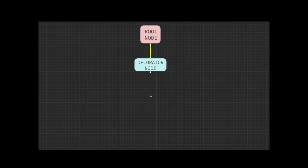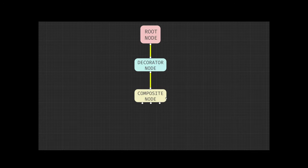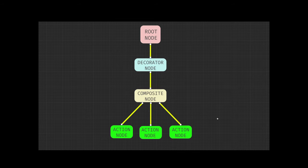The decorator node is basically capable of augmenting the return state of its children. The second type of node is called a composite node, and these basically represent the control flow in your tree, like switch statements and for loops. There are two main types of composite nodes: the selector and the sequence node. The third type of node is an action node, and these are always at the leaf of the tree — they have no children. This is where you implement all of your logic.